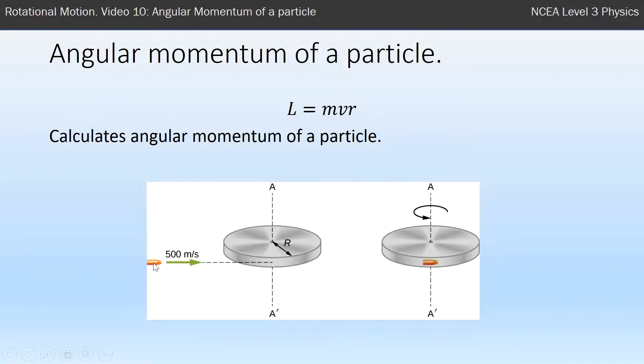So we've got a bullet here, let's say we had its mass, its velocity 500 meters per second, and R is the radius from the center of rotation to where it strikes.